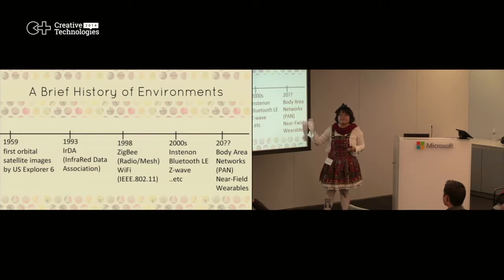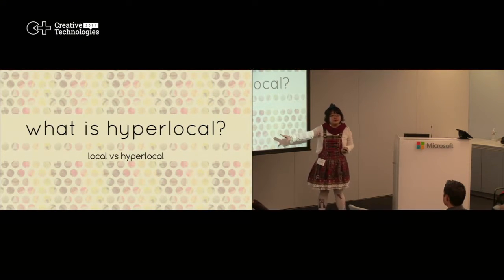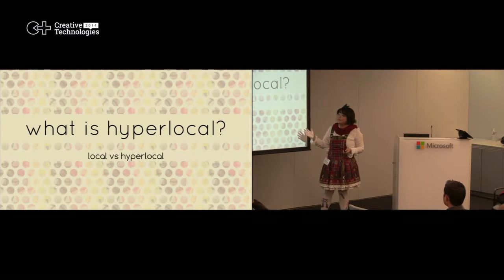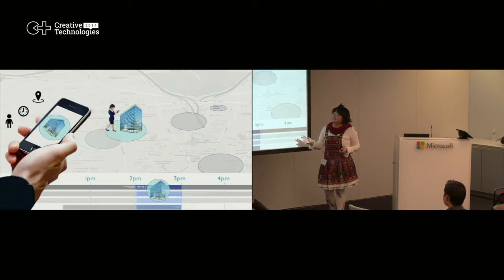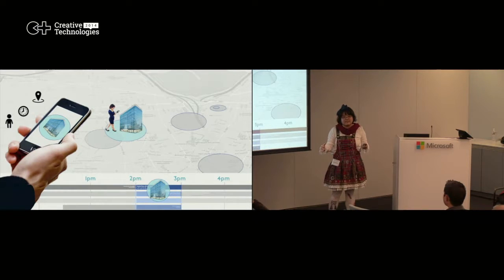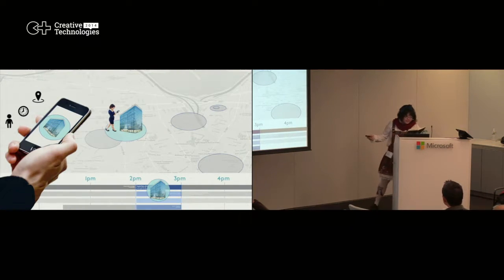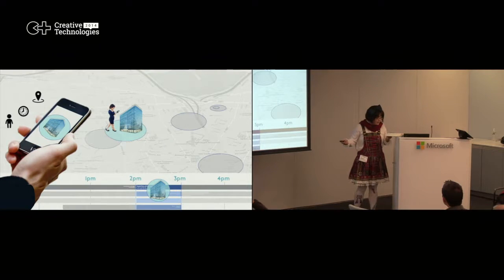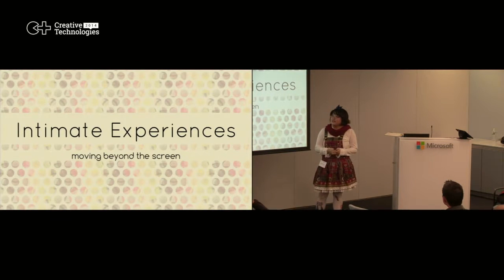And where hyperlocal sits — if we ask what is hyperlocal and what's the difference between local, which is things around us, and hyperlocal — it would sit somewhere on that time scale. Hyperlocal basically creates a context for where your body environment would be. So it's who you are, when you are there, and what you are being. Once we get into the idea of hyperlocal, we can start thinking of intimate experiences that move beyond the screen.